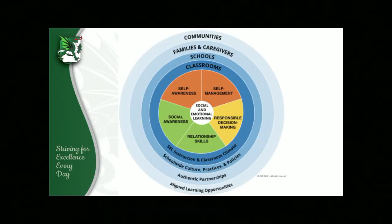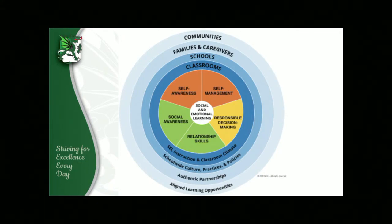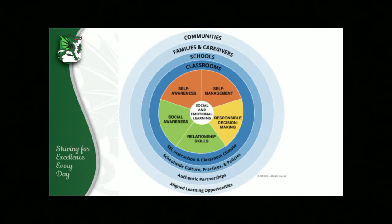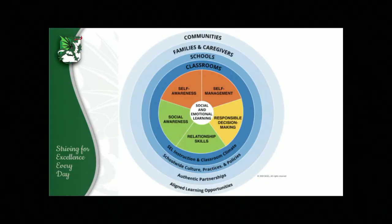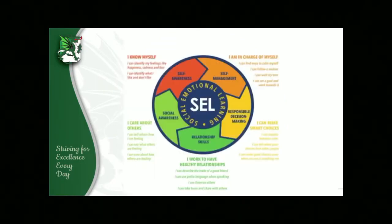In a survey I sent out to staff earlier this school year, I asked about these five competencies without using the formal terms. I asked them to check all that apply — which areas do students need the most help with — and one option listed impulse control, stress management, anxiety, and coping. That was off the charts. That mapped to self-management, so I was able to go back and target our SEL instruction from there.